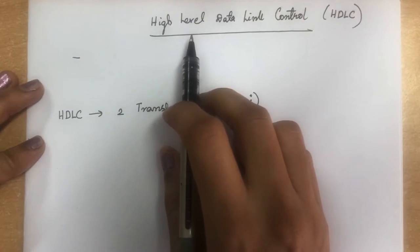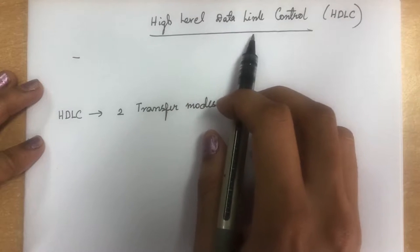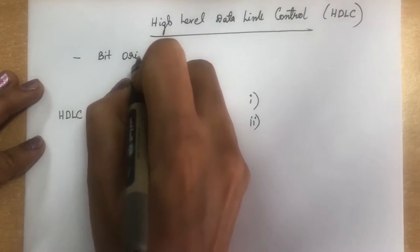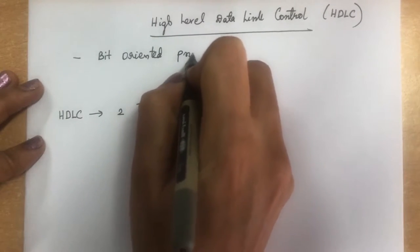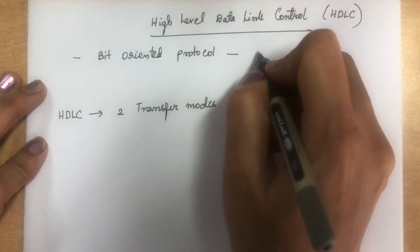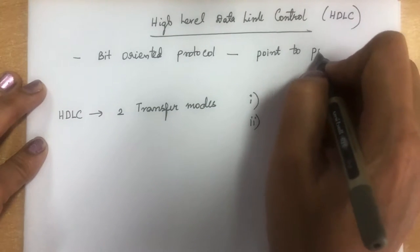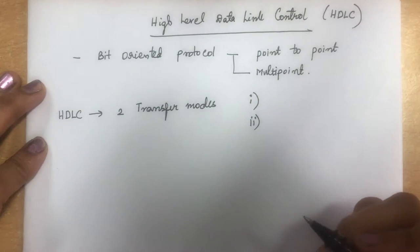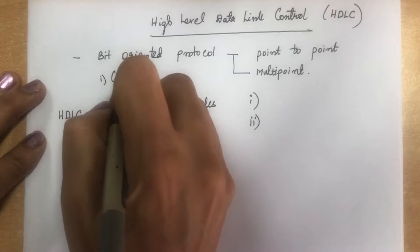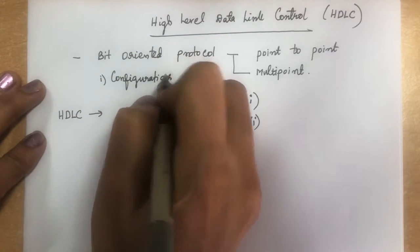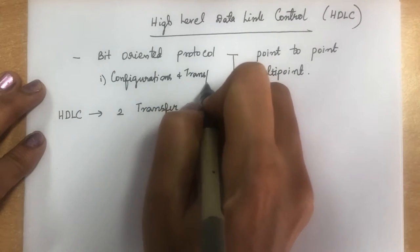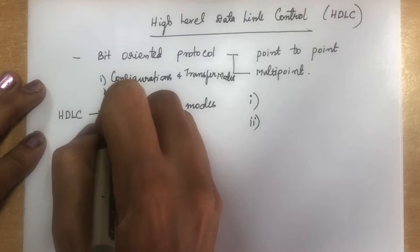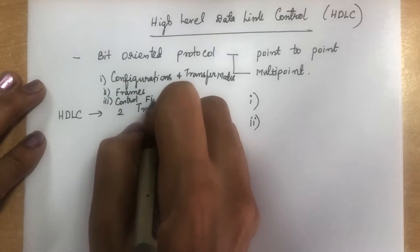Welcome back. Today we are going to see the next topic in the second unit: High-Level Data Link Control, in short called HDLC. It is a bit-oriented protocol used for communication over point-to-point or multi-point links. In this video we are going to discuss three topics: configuration and transfer modes, frames, and the control field.